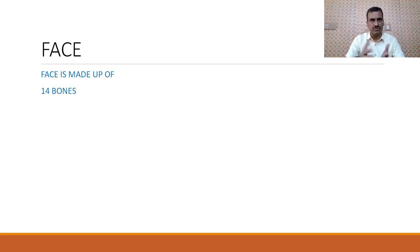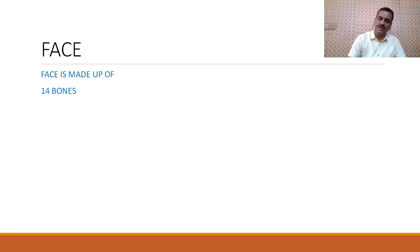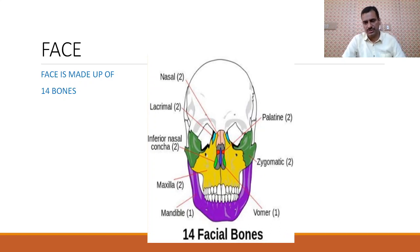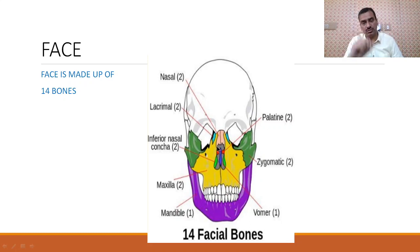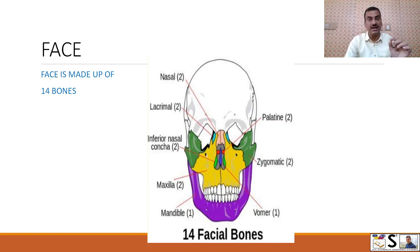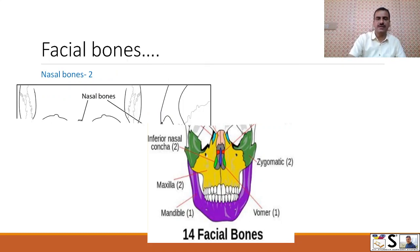Now we come to the bones of face. The bones which lie in front and form our face are called facial bones, and there are 14 bones which form the face. These are nasal, lacrimal, inferior nasal concha or turbinated bone, zygomatic bone, maxilla, vomer, mandible, and palatine. These are very small bones and sometimes it may be difficult to recognize them individually, but normally in examinations they are presented as a skull so you can identify them by location.